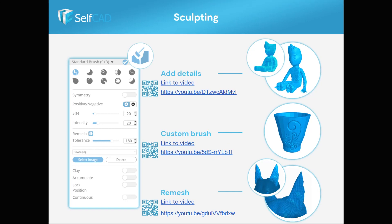Some artists prefer to use simple brushes like in Photoshop, and sculpting gives this flexibility. SelfCAD sculpting comes with the best brushes and allows using custom images as brushes. In this example, you can see how to take any shape and modify it using sculpting, use a custom brush, and finally use remesh to fix the topology as needed.